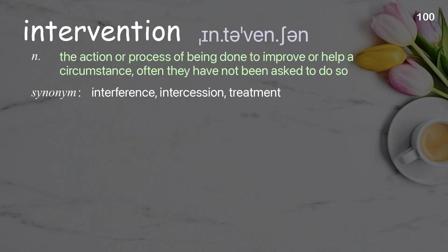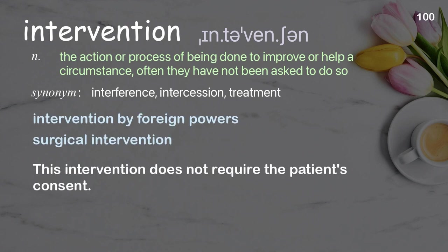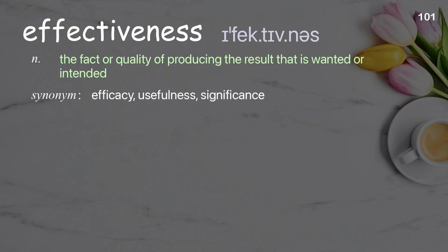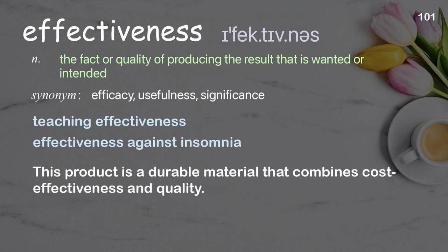Intervention: the action or process of being done to improve or help a circumstance, often when not asked to do so. Examples: intervention by foreign powers, surgical intervention. This intervention does not require the patient's consent. Effectiveness: the fact or quality of producing the result that is wanted or intended. Examples: teaching effectiveness, effectiveness against insomnia. This product is a durable material that combines cost-effectiveness and quality.